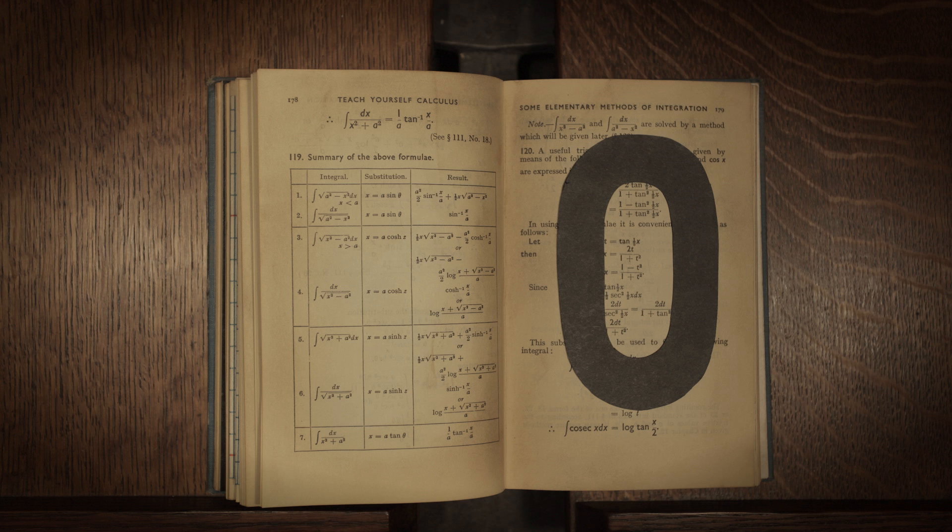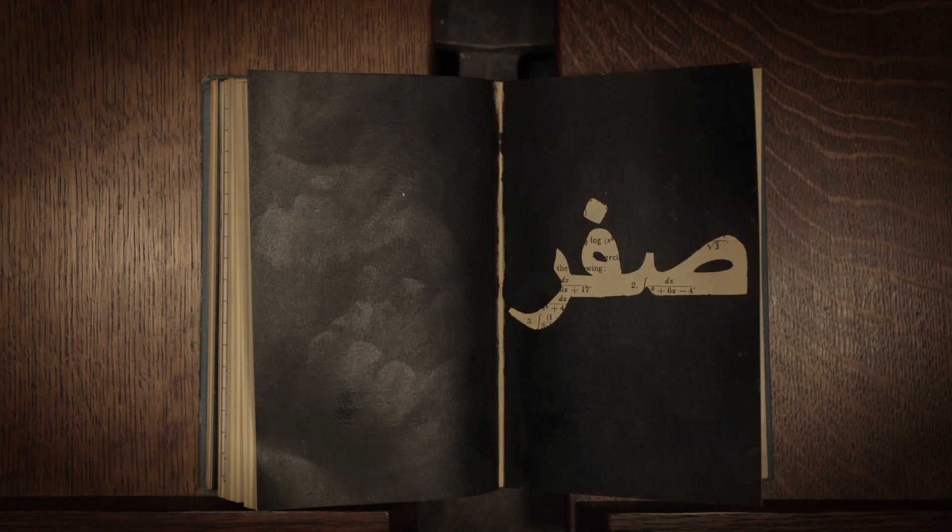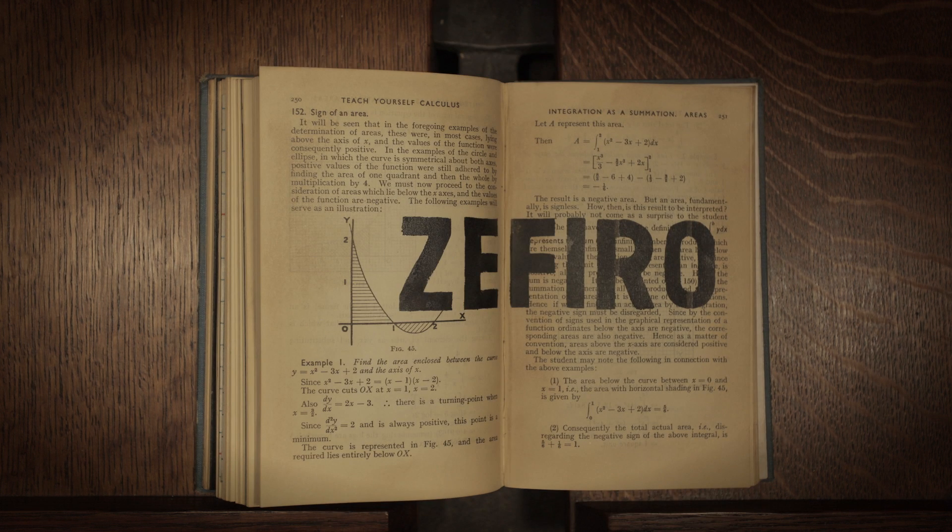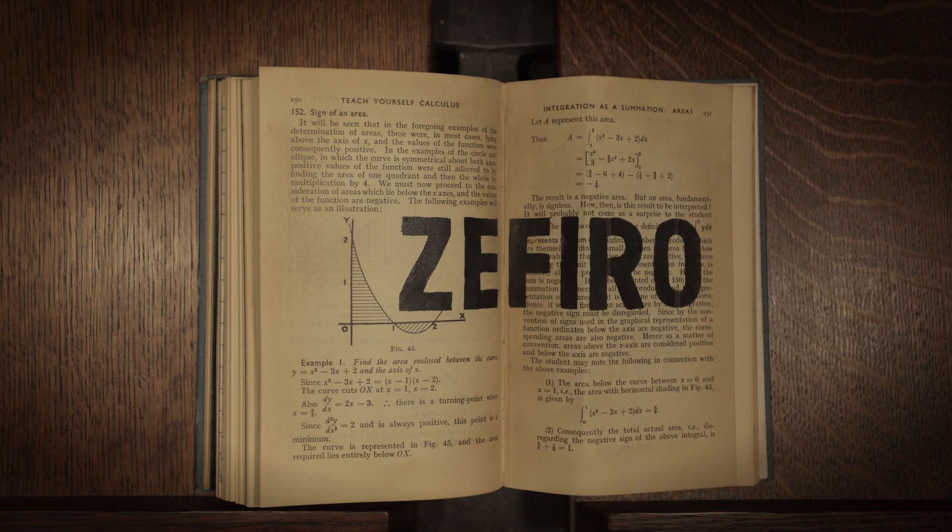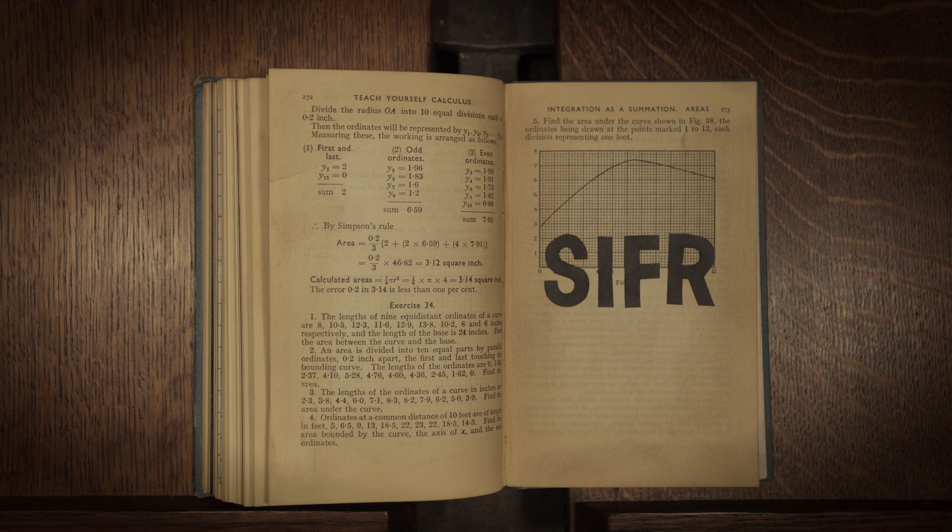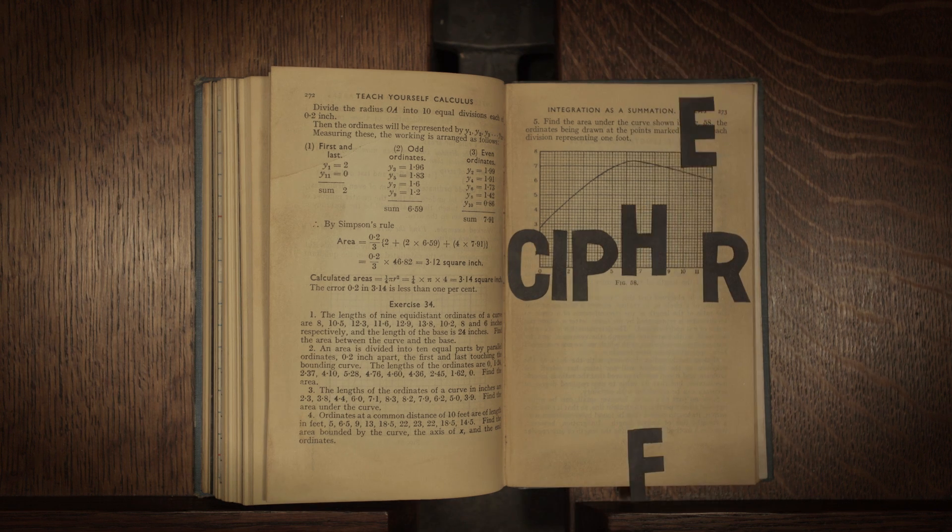The word zero comes from the Arabic Sifra, whose literal translation is empty. Passing through Italian as Zafiro, zero came into English in the 17th century. A second descendant of the Arabic root was adopted into English through Old French as the word cipher.